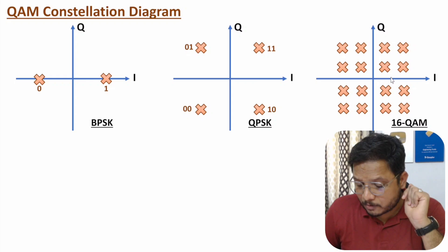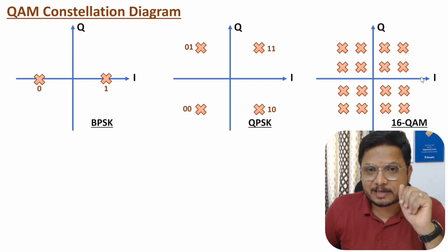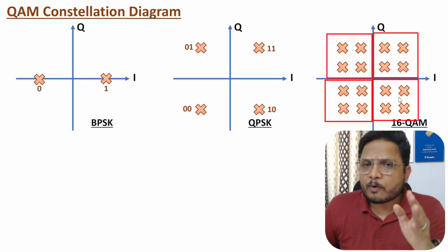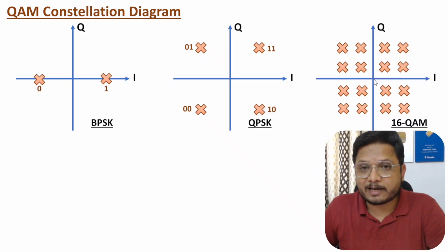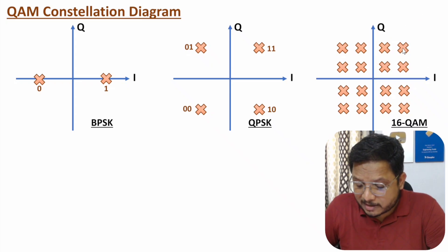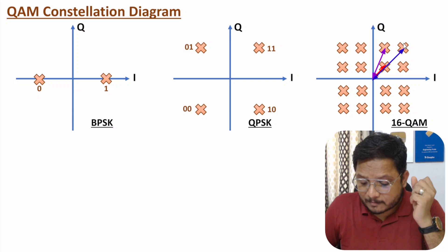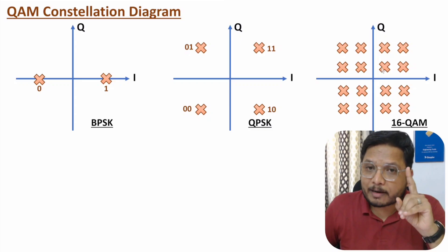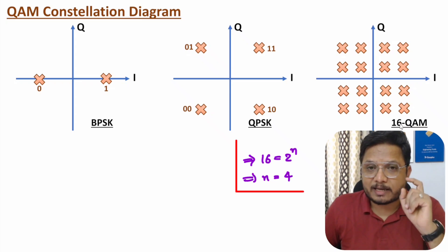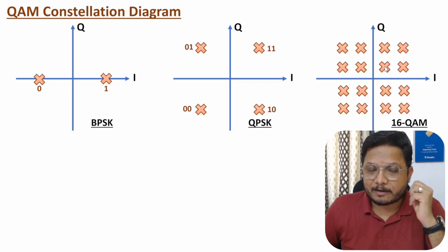For 16-QAM, to find the number of amplitude levels, focus on one quadrant only. In that quadrant, if you bisect diagonally, you can observe three symbols each having a unique distance from the center — so there are three amplitude levels with 16-QAM. For bits per symbol: 2^n = 16, so n = 4, meaning each symbol carries 4 bits.